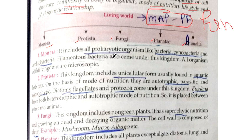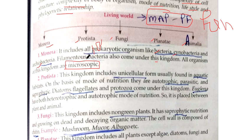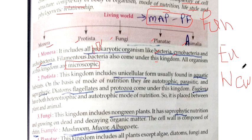Now the first kingdom is Monera. These are prokaryotic cell organisms. A trick to remember: all prokaryotic cells are old organisms. This kingdom includes bacteria, cyanobacteria, archaeobacteria, and filamentous bacteria. All organisms in this kingdom are microscopic. After evolution, the new cell is known as the eukaryotic cell.